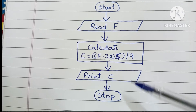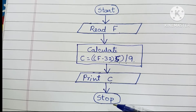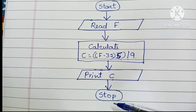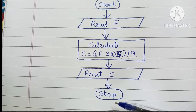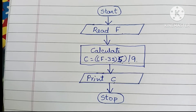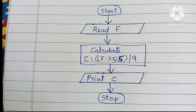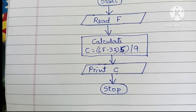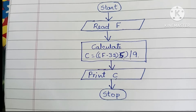Write Print C inside the parallelogram. Then stop the flowchart using the stop statement in an oval shape. This is the flowchart to convert temperature from Fahrenheit to Celsius.